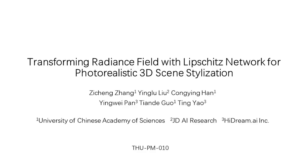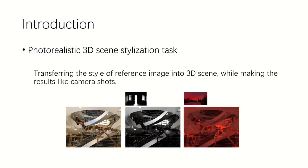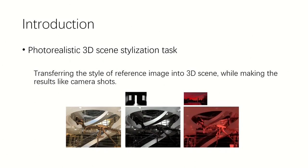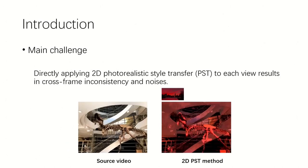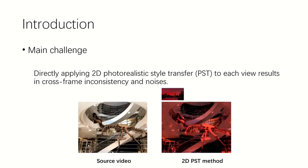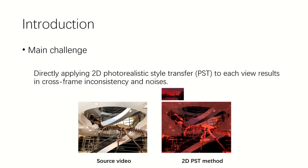Brief introduction of our work to solve photorealistic scene stylization. The task aims to transfer the style of a reference image into a 3D scene while making the results still look photorealistic. To achieve this, the most straightforward way is to stylize each view with a 2D photorealistic style transfer approach. However, this might result in noise, disharmony, and even inconsistency across views.